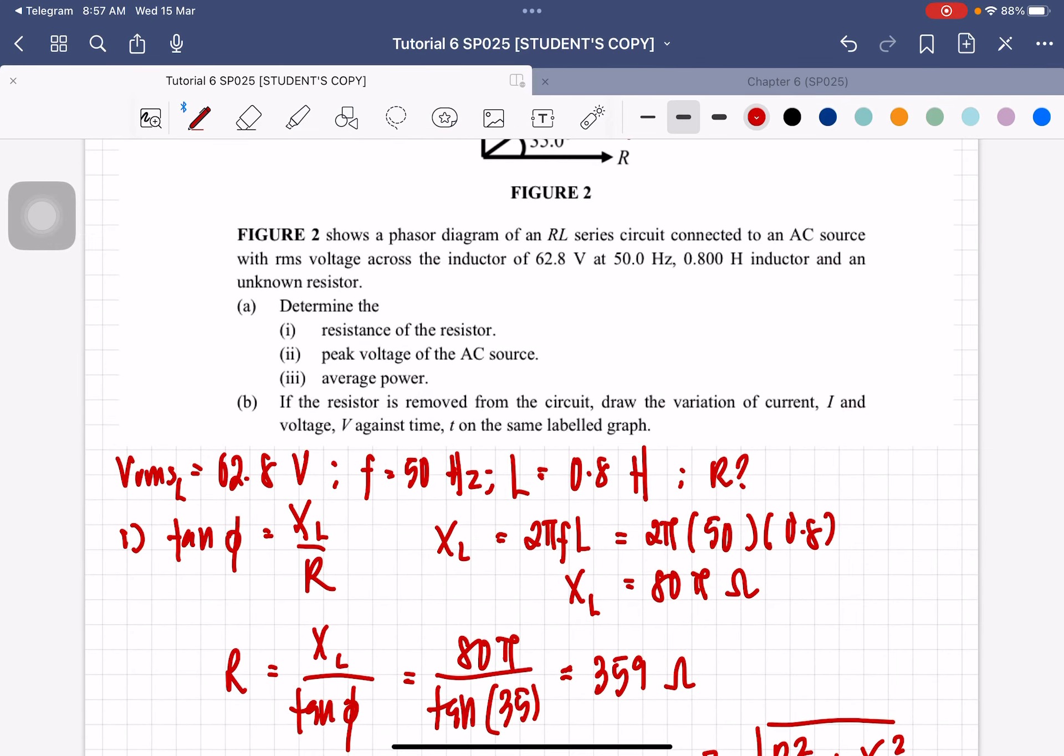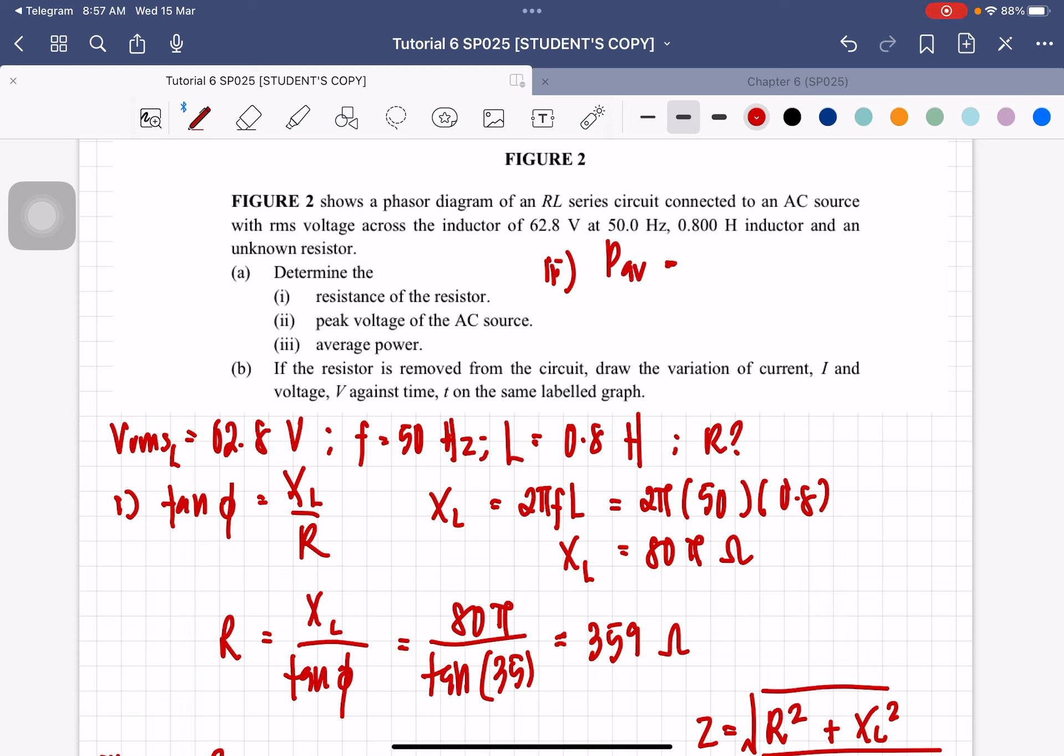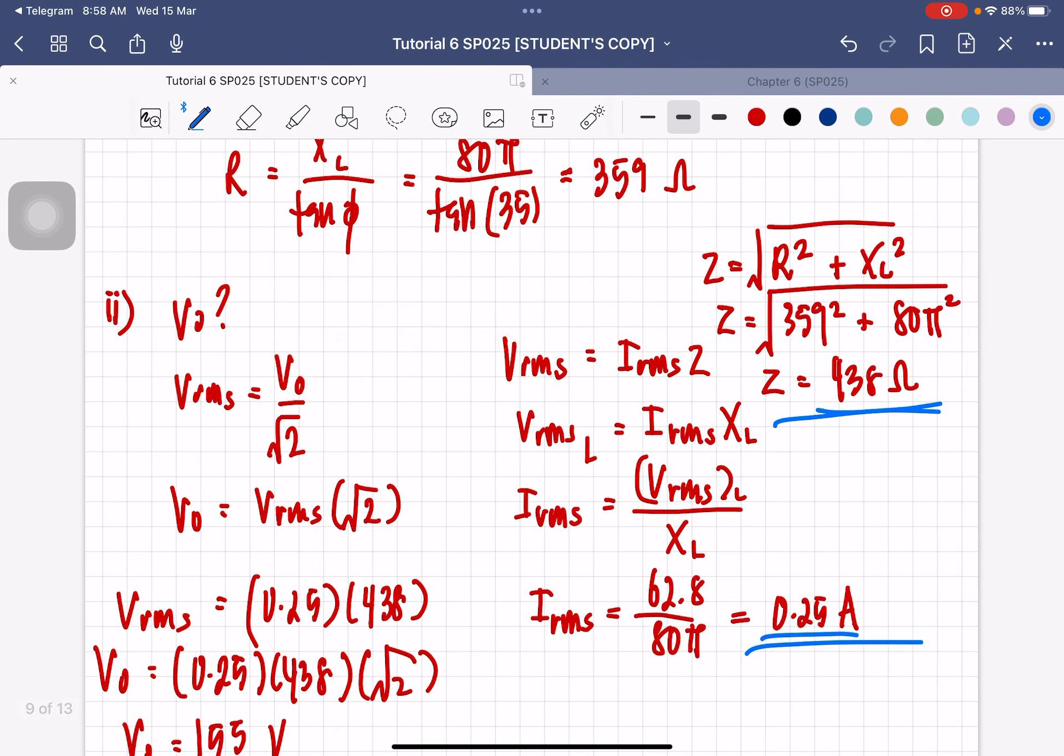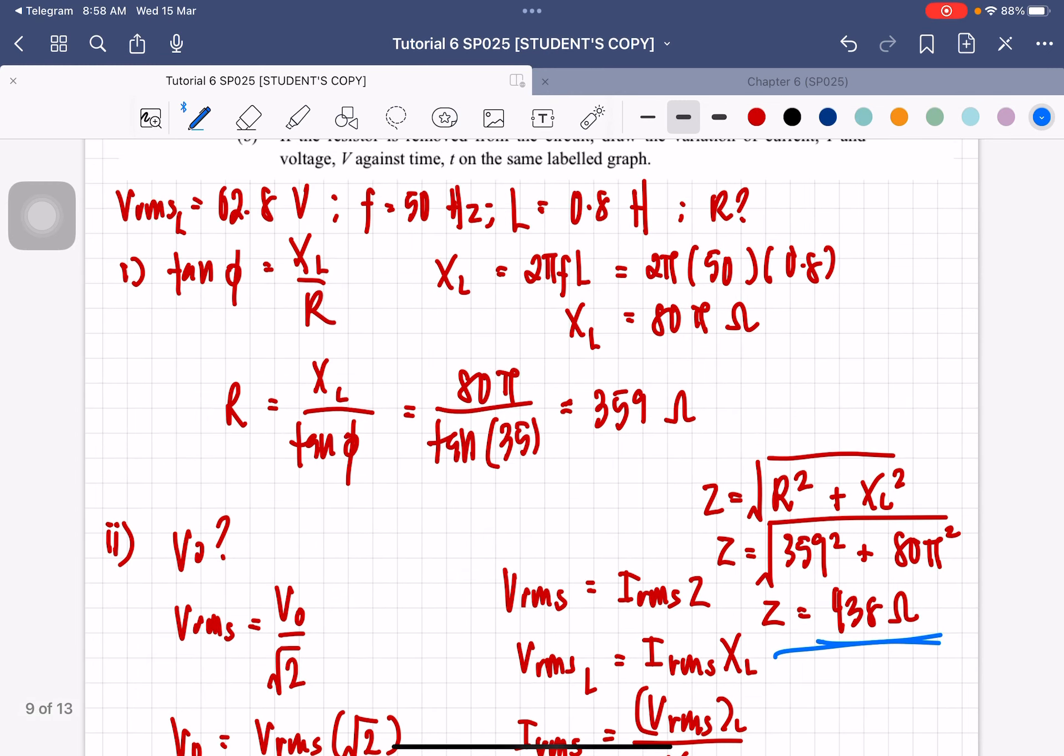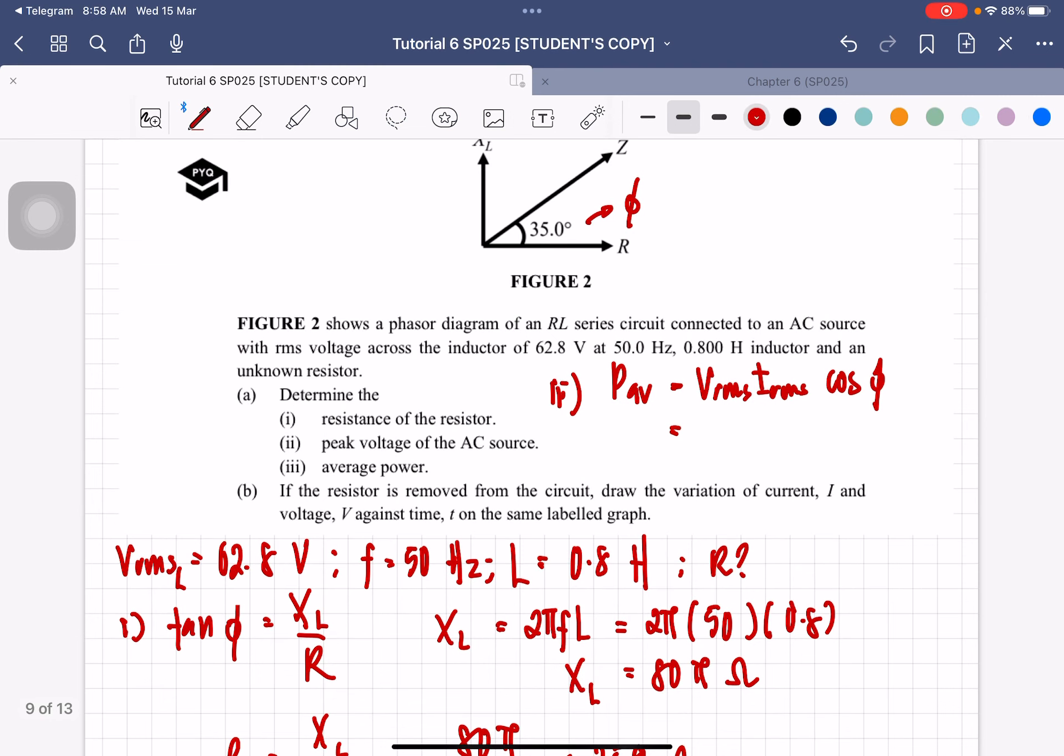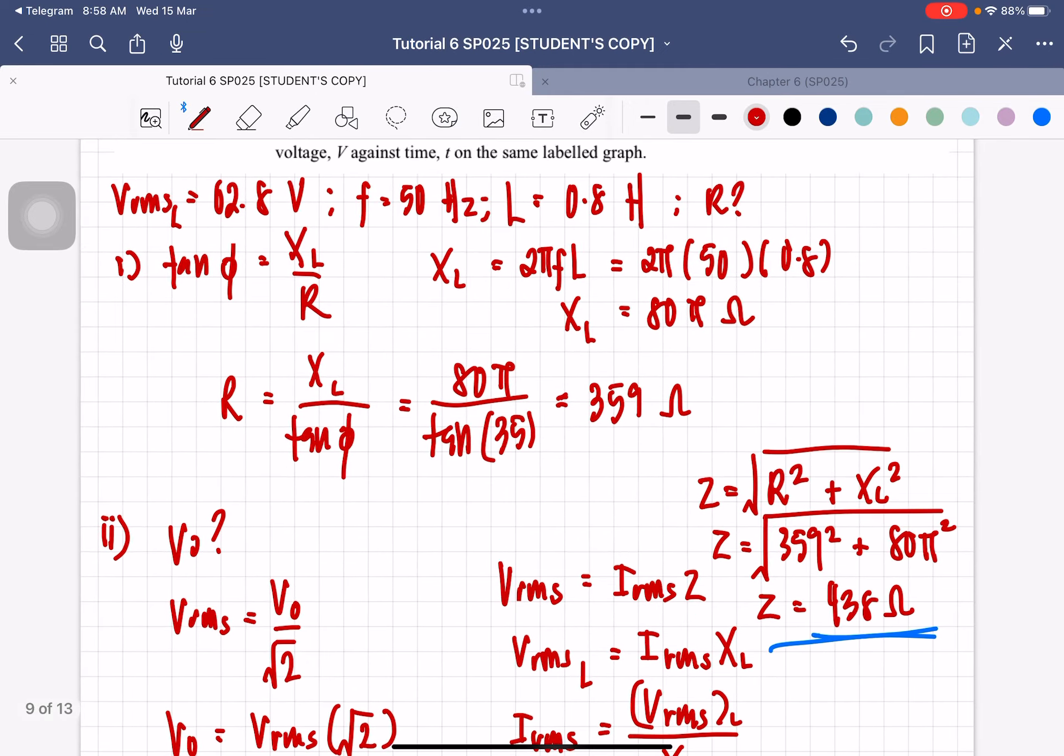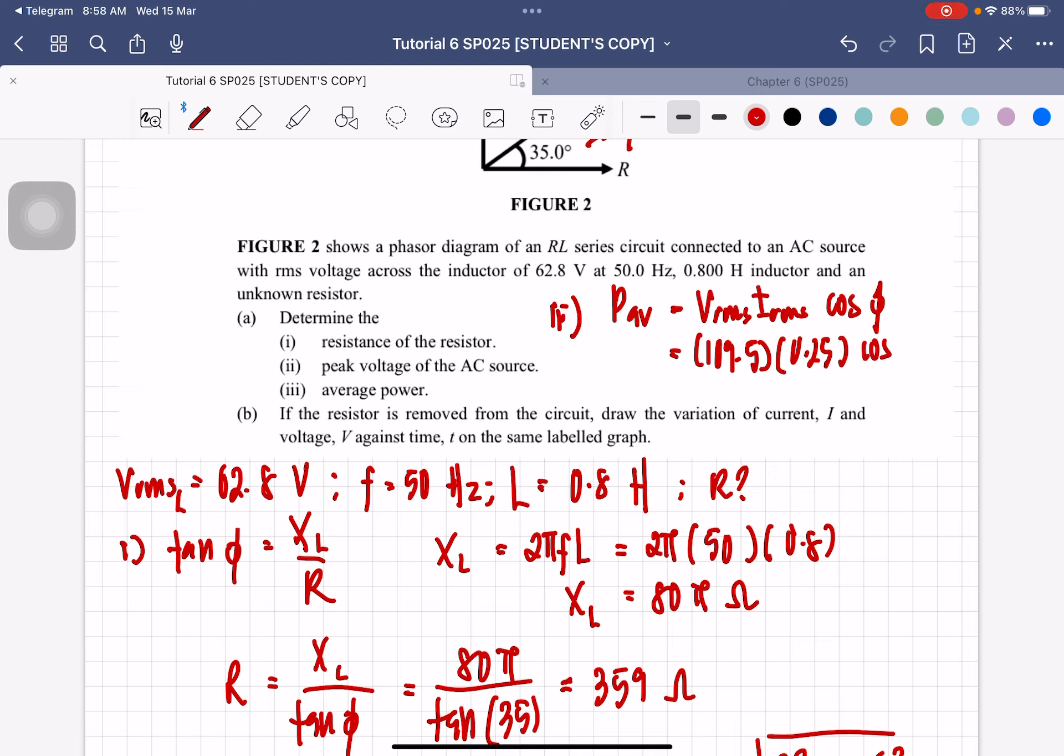Next, we have to find the average power. So for the average power, we know that PAV equals VRMS times IRMS times cos phi. The phase angle we already know. VRMS we already calculated. That is basically 0.25 times 438 which is 109.5 volt. IRMS is 0.25, cos 35 degree. So the average power is going to be equal to 22.4 watt. So that is the average power.